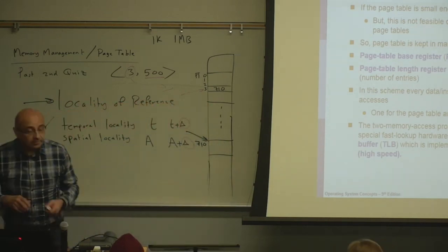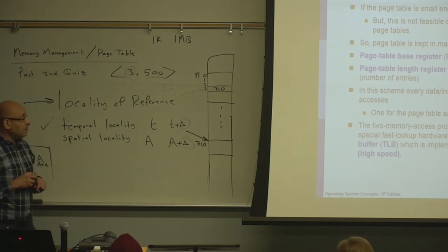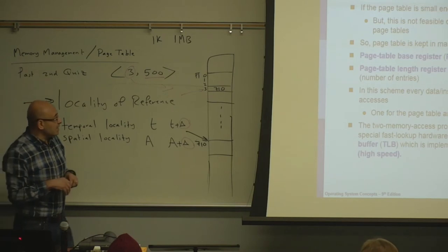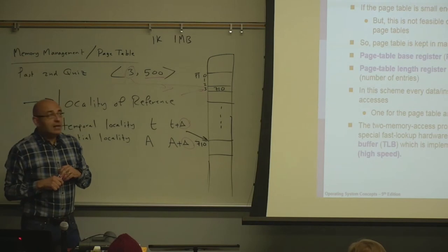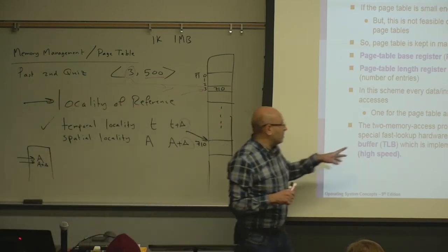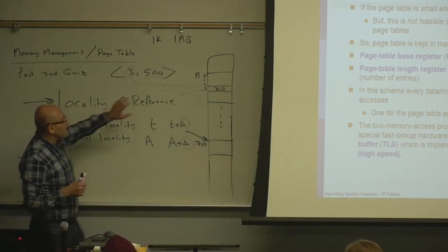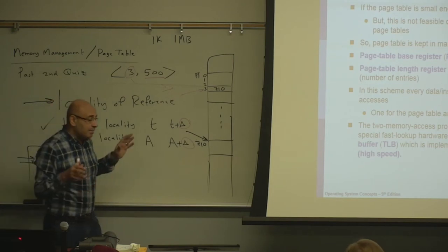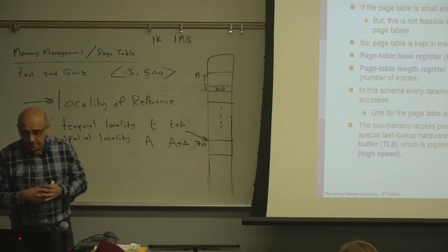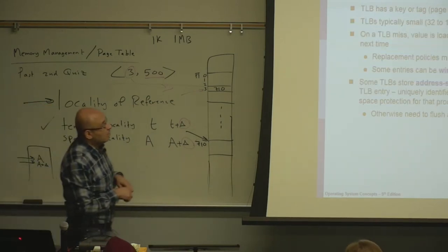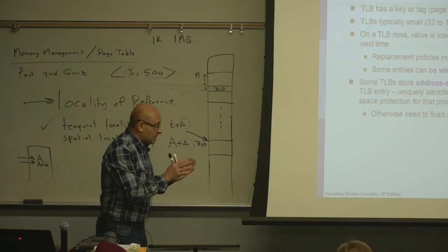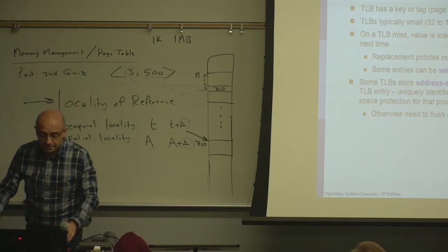To solve this problem, people thought of caching a subset of the page table on chip — in what they call the Translation Look-aside Buffer (TLB). The TLB is a cache for the page table. It holds a small subset of page table entries. If the page table has 1,000 entries, the TLB might hold only 32 to 1,000 entries — just a small subset.